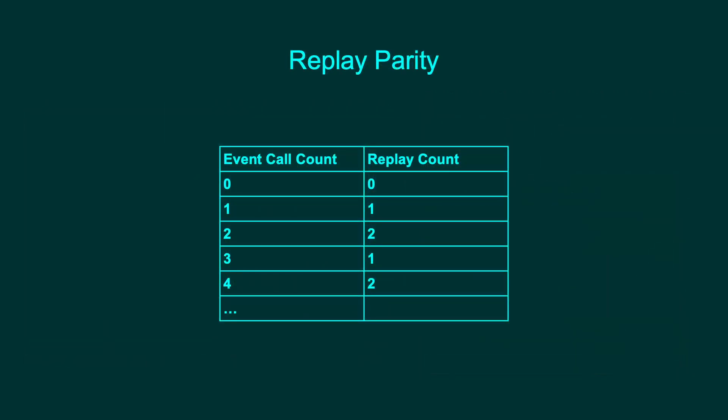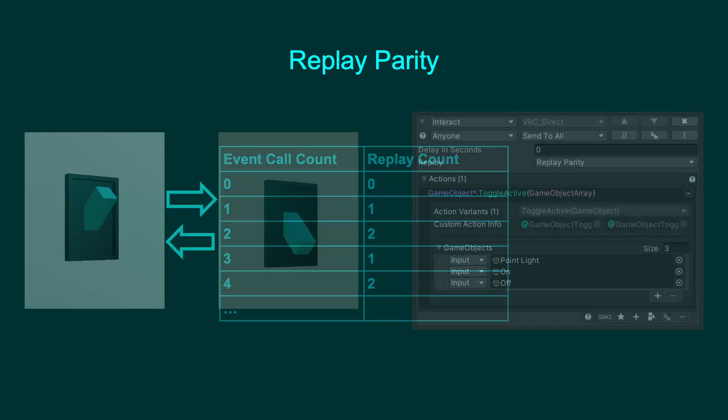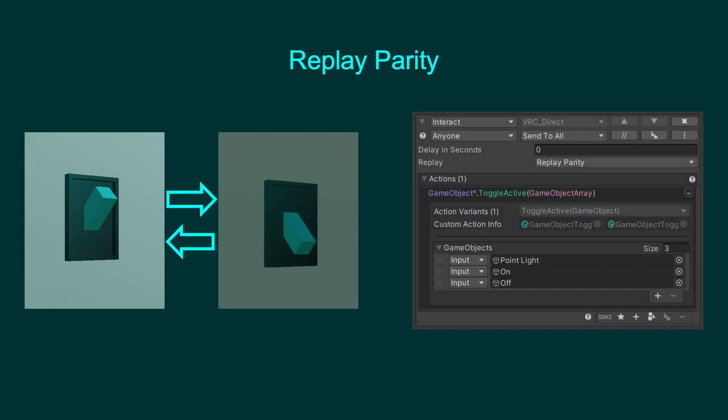Replay Parity will save if the event has fired at all and replay it one time if it was fired an odd number of times, or replay it two times if it was fired an even number of times. Replay Parity is intended for events that toggle object states.